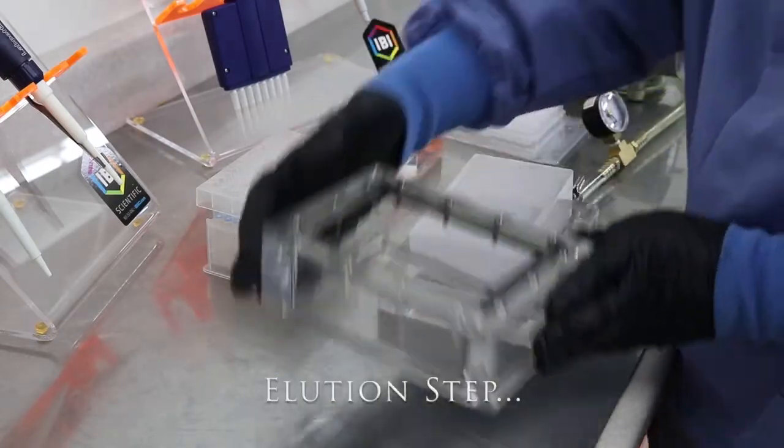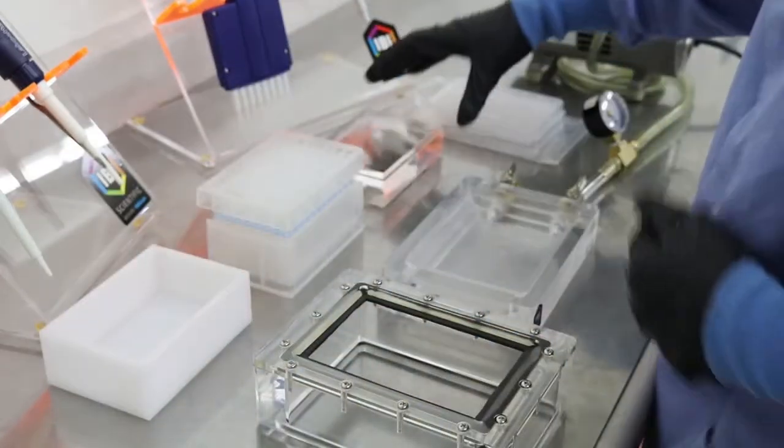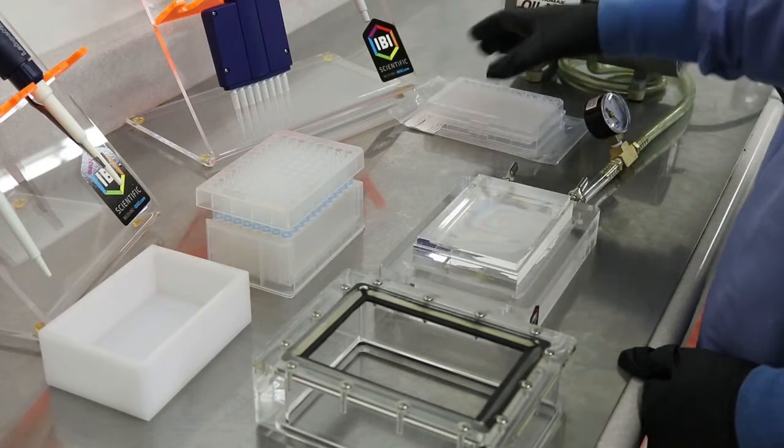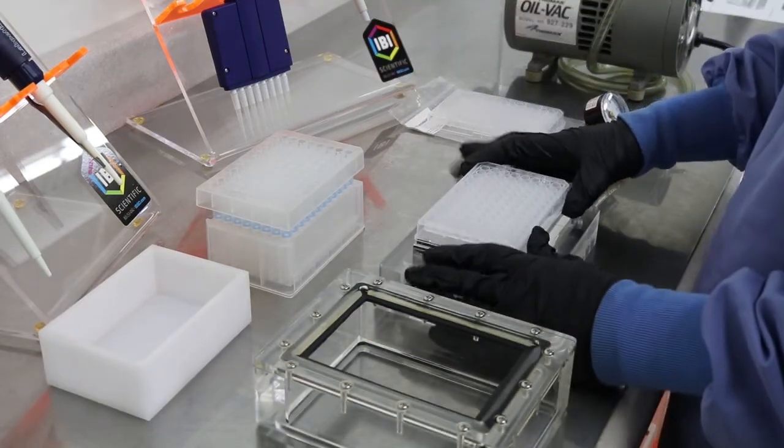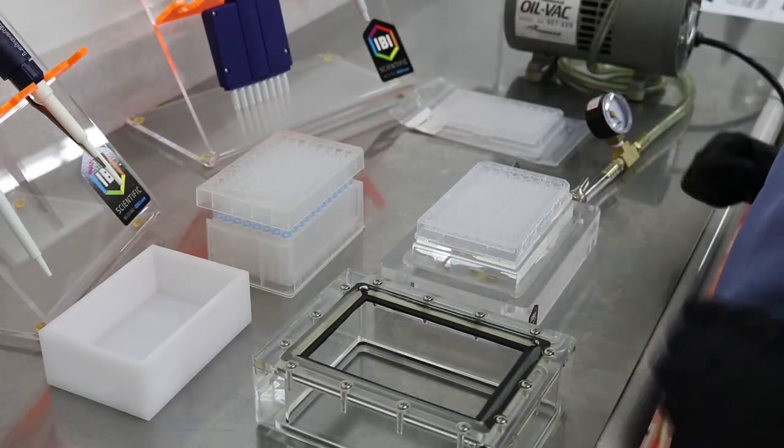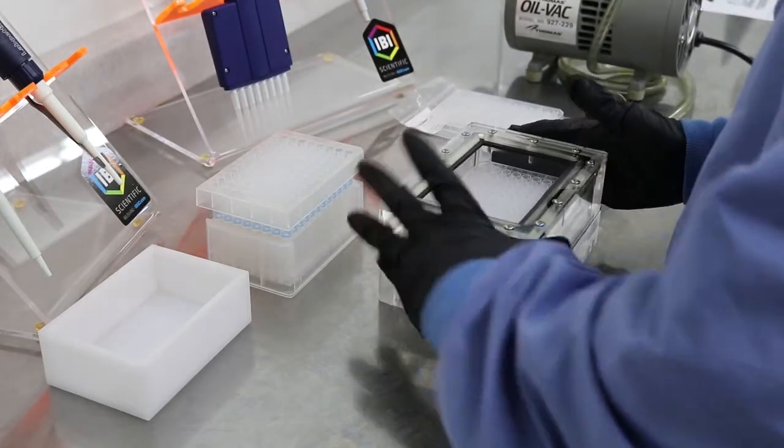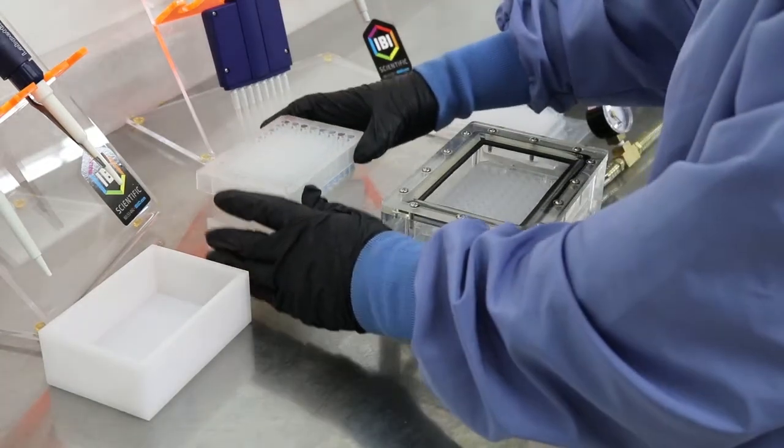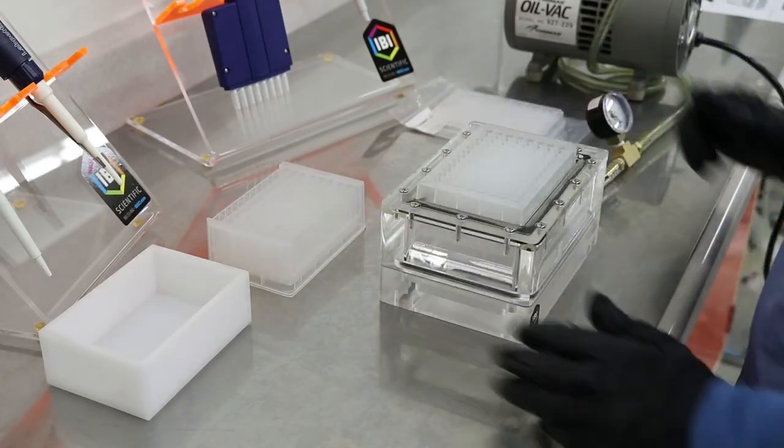The elution step has a very similar setup, but to elute, remove the top piece and waste tray and place the collection plate spacer into the base of the vacuum manifold. Place the collection plate on top of the collection plate spacer. Place the top piece on the base. Place the binding plate back on the top piece and open the vacuum to elute.